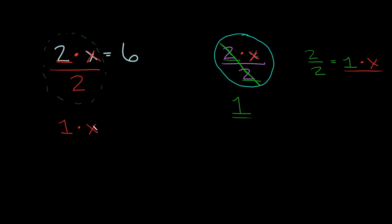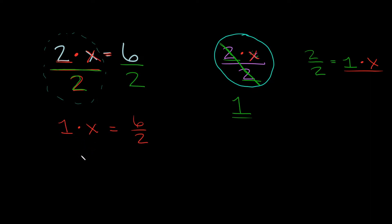There's still one really important thing we have to do — what you do to one side of an equation you do to the other. So if we're dividing by 2 on this side, we also have to divide by 2 on the other side. So we simplified the left side down to 1 times x, and that's equal to 6 over 2. Now, 1 times x is just x, and 6 over 2 is the same as 6 divided by 2, which is just 3.